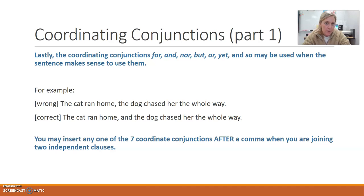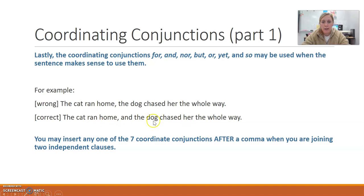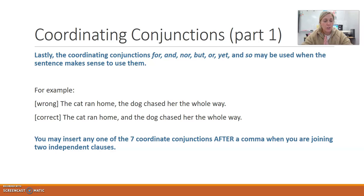The last way to join independent clauses would be with coordinating conjunctions. There are seven coordinating conjunctions and that's it: for, and, nor, but, or, yet, and so. They can be used with a comma when it makes sense. For example, the correct way: 'The cat ran home, and the dog chased her the whole way.' The only thing you need to remember is you always have to use a comma before the coordinating conjunction. You can't just use the word 'and,' and you also can't just use the comma — you've got to use both together. So any of these seven coordinating conjunctions must follow a comma when you're joining two independent clauses.